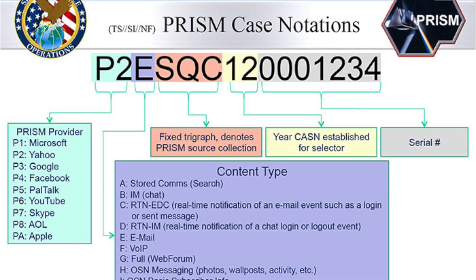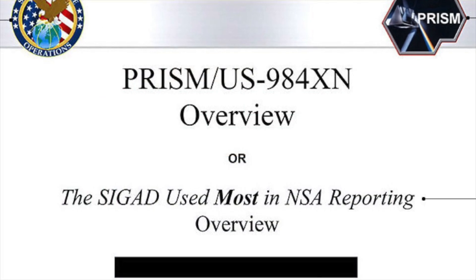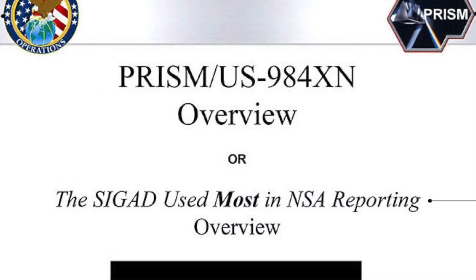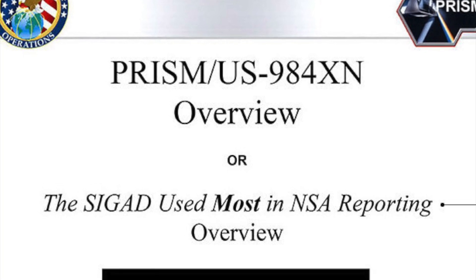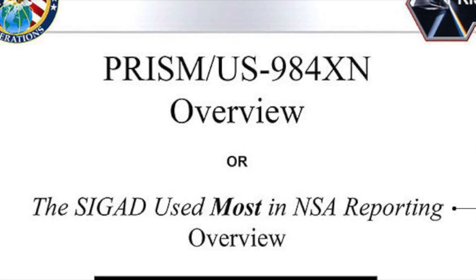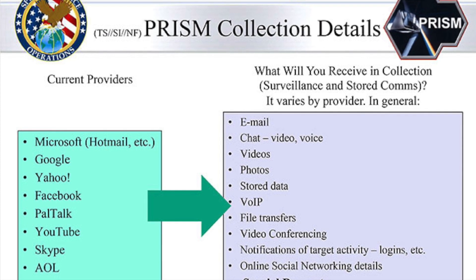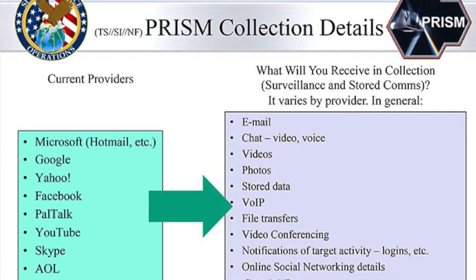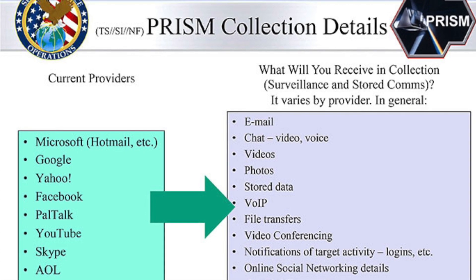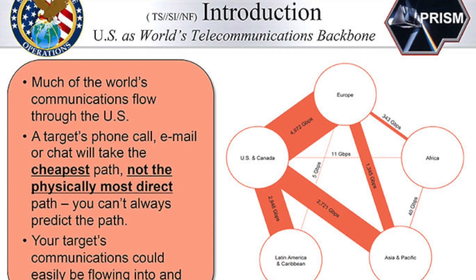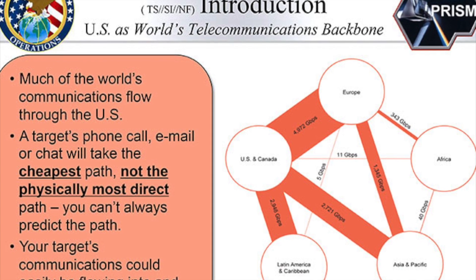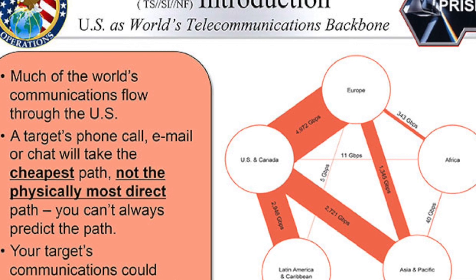Facebook stated that for six months ending December 31st, 2012, the total number of user data requests Facebook received from any and all government entities in the U.S. was between 9,000 and 10,000. According to the Financial Times, in the wake of Snowden's revelations, the Obama administration defended the way it obtains private communications. James Clapper, the Director of National Intelligence, issued a statement stating: Information collected under this program is among the most important and valuable foreign intelligence information we collect, and is used to protect our nation from a wide variety of threats.